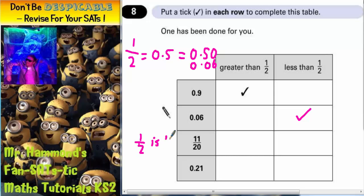So a half is 10 twentieths. And you can see that 11 is greater than 10. So 11 twentieths must be greater than 10 twentieths. So this one's greater than a half.